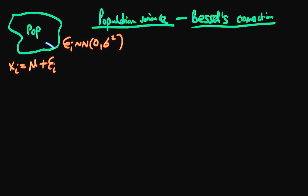The idea here is that we only have a sample from that population, and we're trying to use some mathematical tool on that sample to gauge, first of all, what the population mean is, and secondly, to estimate what the population variance is. A relatively intuitive thing to do to form an estimate of the population mean would be to calculate the sample mean.